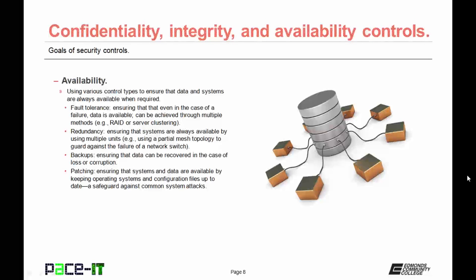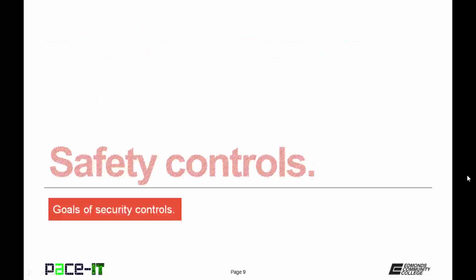Then there's redundancy — this is ensuring that systems are always available by using multiple units, as in using a partial mesh topology to guard against the failure of a network switch. Backups are another way of ensuring availability, ensuring that data can be recovered in the case of loss or corruption. Patching is another method, keeping operating systems and configuration files up to date and safeguarding against common system attacks that might bring down those devices.